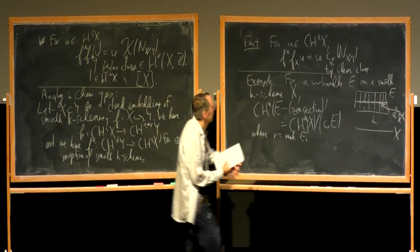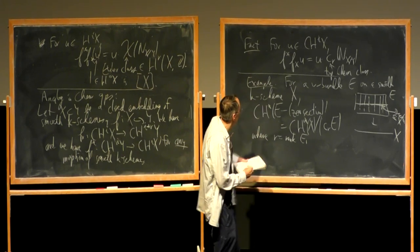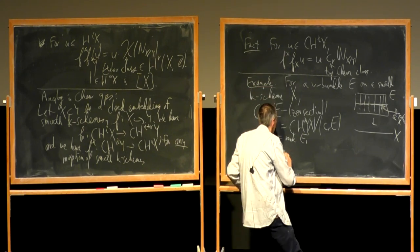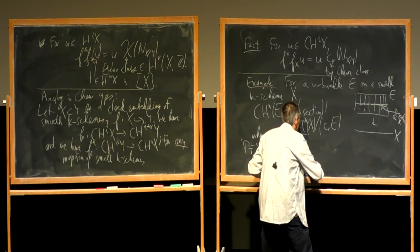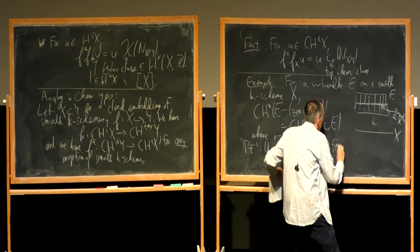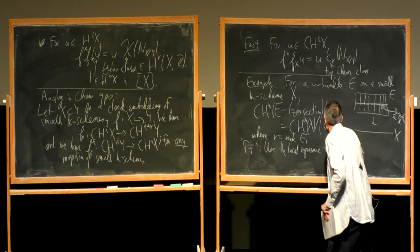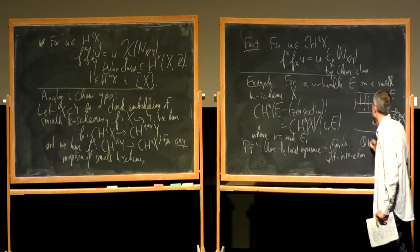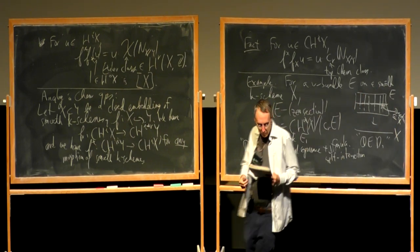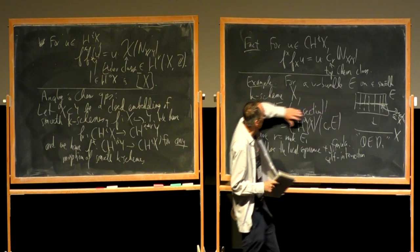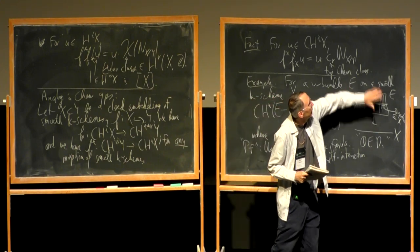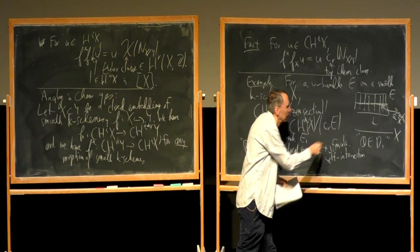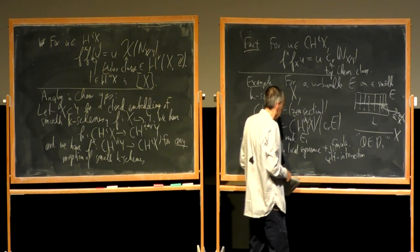The proof uses the localization sequence plus this self-intersection formula. The localization sequence tells you that the Chow ring of E — which is the Chow ring of X — maps onto the Chow ring of E minus the zero section, so it's some quotient of the Chow ring of X. And if you look at the map, you see that we're exactly modding out by this top Chern class.